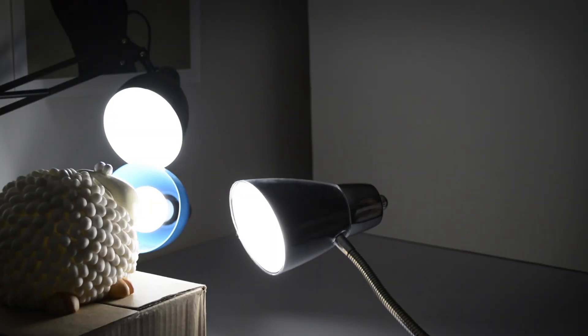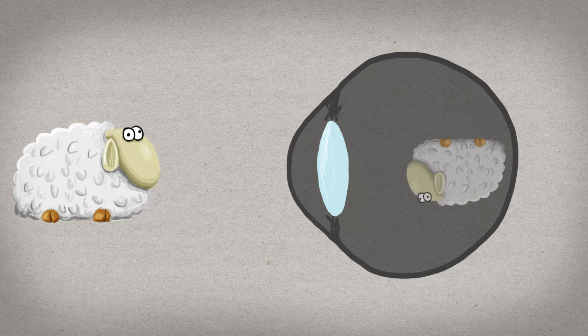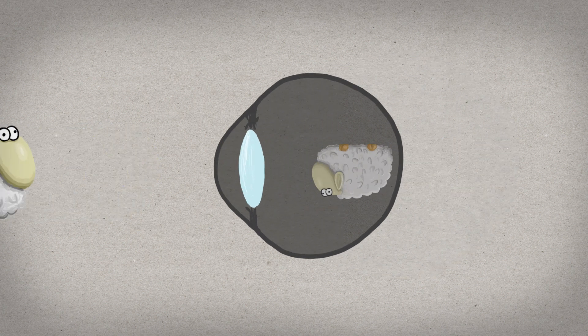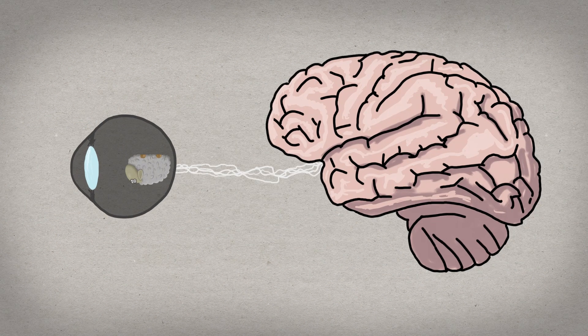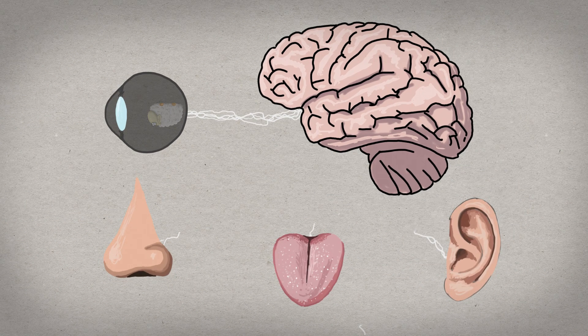When light bounces off an object, the light can be directed by a lens to form an image. A lens in the eye does this and creates an image at the back of the eye where we have an array of neuron cells that detect the light and send the information on the image to the brain. And it's a similar story for your other sensory cells that pick up other stuff.